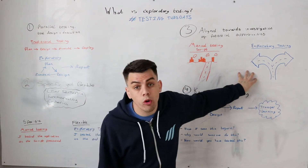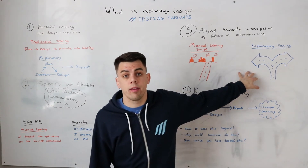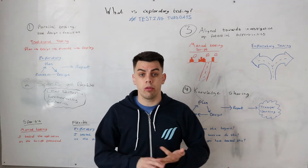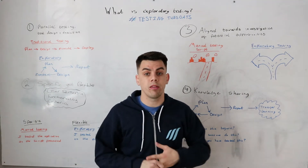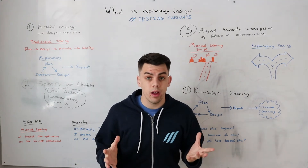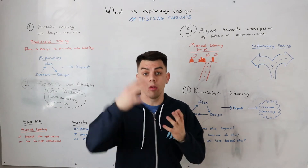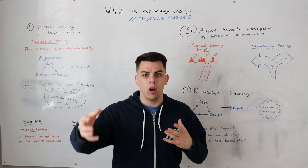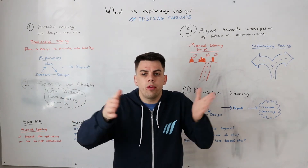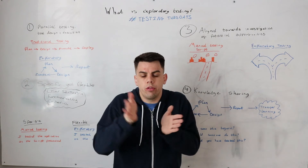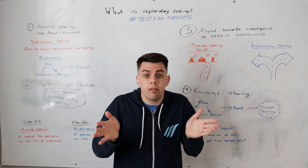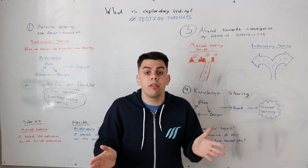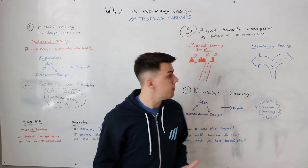However, with exploratory testing I can say well actually I can use A roads, I can use B roads, I can use motorways — I can use any road there is to get to my same destination, my same goal. I might choose a different route rather than just the motorway because I'm going to find new places to explore, new areas of the application that we didn't think of.